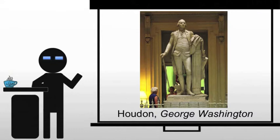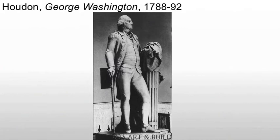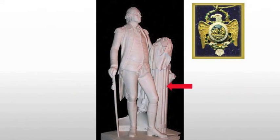In his version of George Washington, what we see is Washington in a form that makes overt references to the Roman Republic. For example, as we look at it,